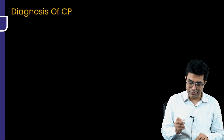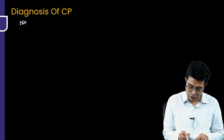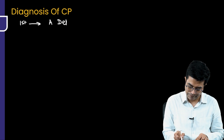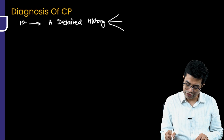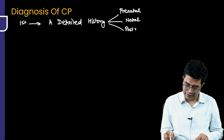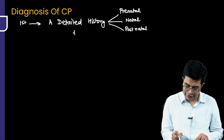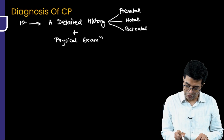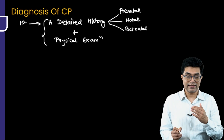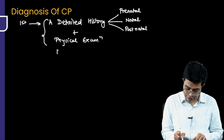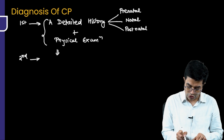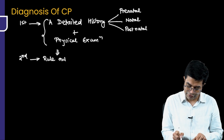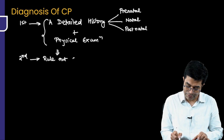For diagnosis of CP, first you need to take a detailed history. A detailed history is very, very important, focusing on the prenatal, antenatal, natal, and immediate postnatal history. Along with that, you need to perform a physical examination. A combination of these two will suggest cerebral palsy. As a second step, based on history and examination, you should always rule out a progressive disorder.